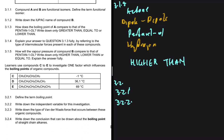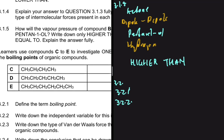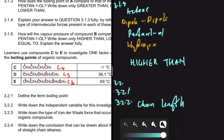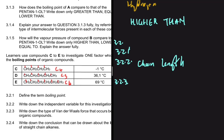For 3.2.2, the independent variable for this investigation is identified by looking at compounds C, D, and E. Compound C has four carbons, compound D has five carbons, and compound E has six carbons. What is being changed is the chain length, so the independent variable is chain length — or equivalently molecular mass, since as chain length increases, molecular mass also increases.